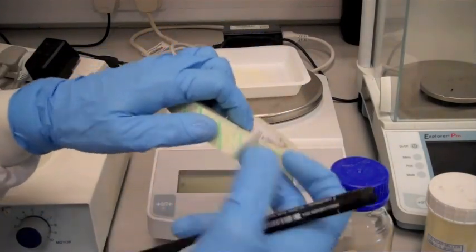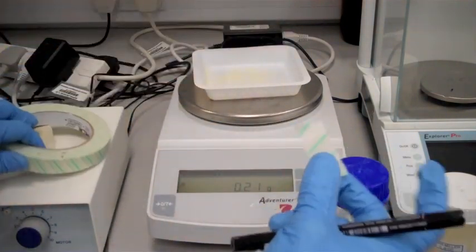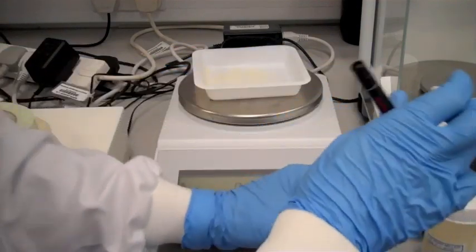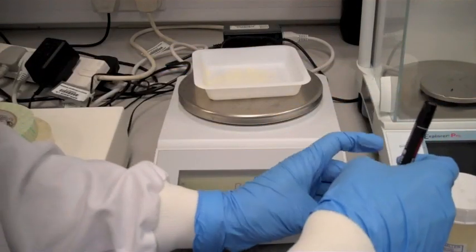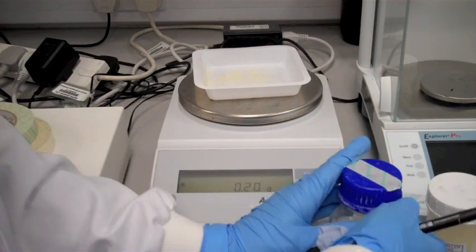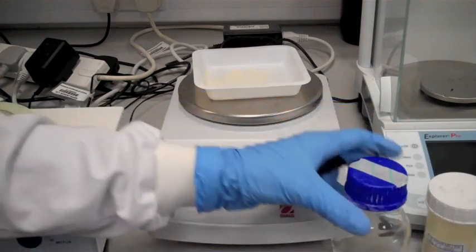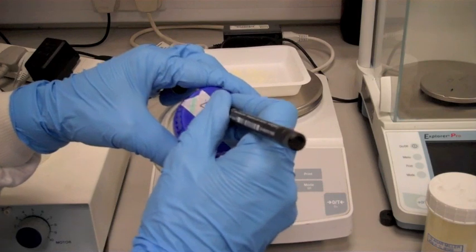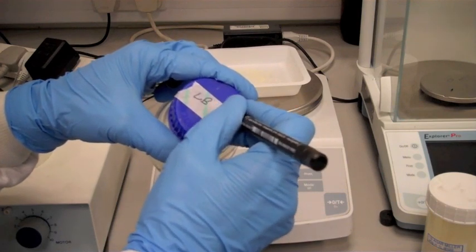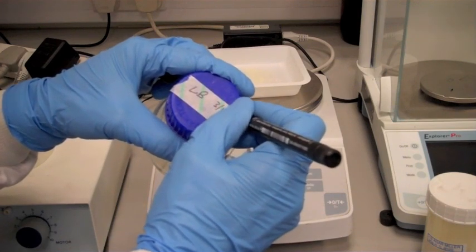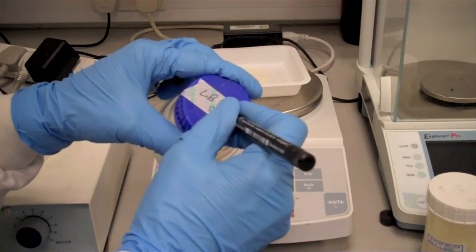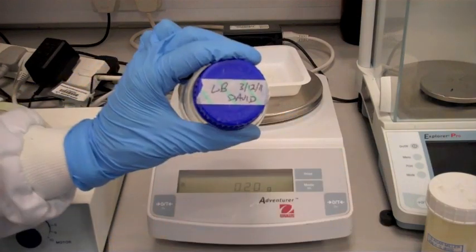So take a little bit of the tape, that's more than enough, and place it onto the lid of the bottle. And then mark on the top LB, the date, and your name. Something like that.